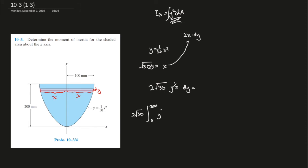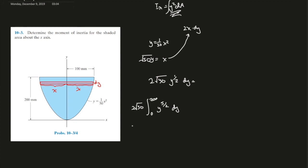That's 2, so that's 4, that's 5 over 2 dy, right? And do integration real quick. This should be pretty easy.